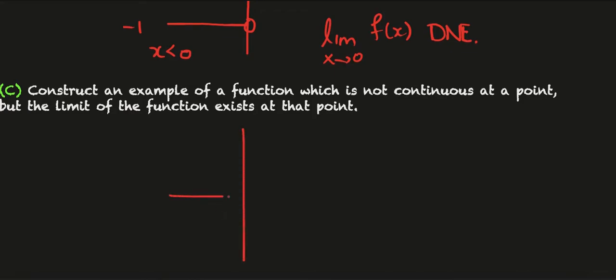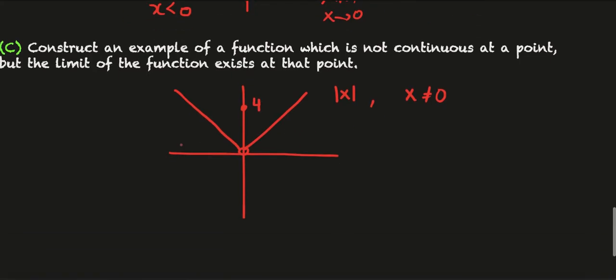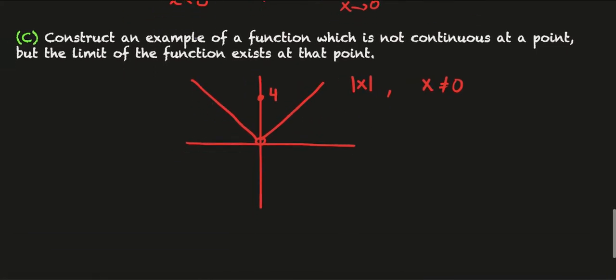My favorite example is when we consider the modulus function for all x that are non-zero. So this is mod x when x is not equal to zero, but when x is equal to zero we'll just define the function to be four.